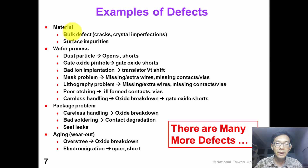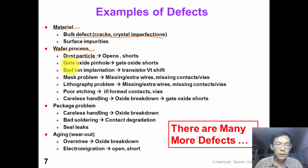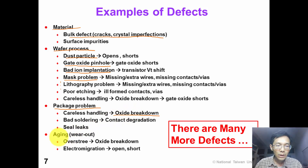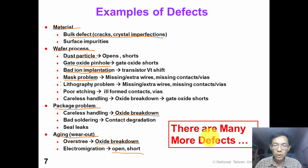This slide shows many examples of defects. For material defects, we have defects in the bulk. We also have defects due to oxide breakdown caused by careless handling.